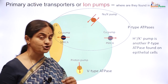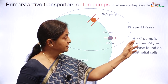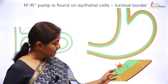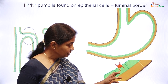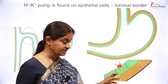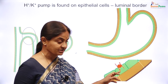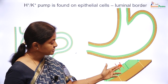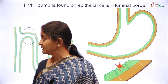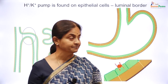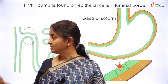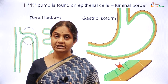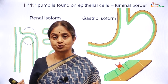There is one P-type ATPase which is not found on all cells: the hydrogen-potassium pump. It is found on the luminal border of epithelial cells. We know that potassium concentration within a cell is higher than outside; therefore, this pump moves potassium actively into the cell while extruding hydrogen ions from the cell. The hydrogen-potassium pump is found on the luminal border of epithelial cells in the stomach and in the distal renal tubular epithelium. What we have in the stomach is the gastric isoform and what we have in the kidney is the renal isoform. Their specificities for blockers differ, and therefore they can be considered as two independent proteins.